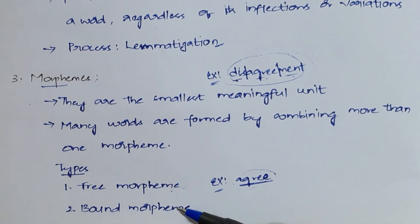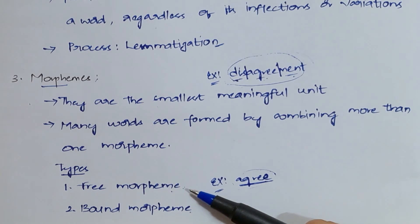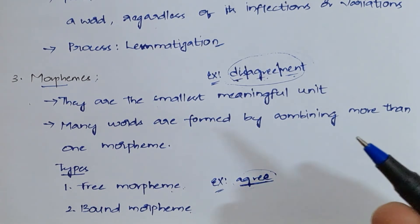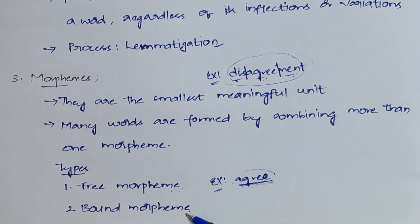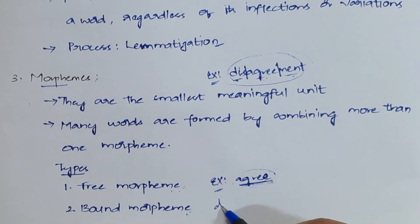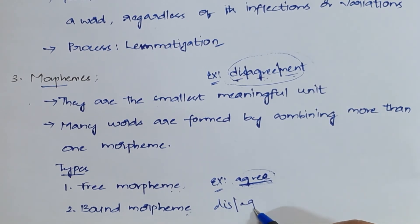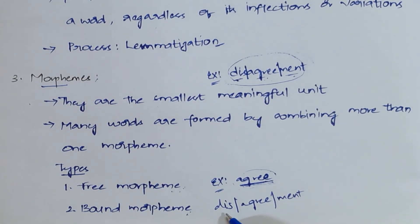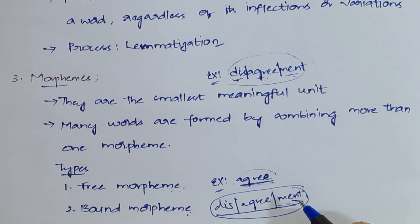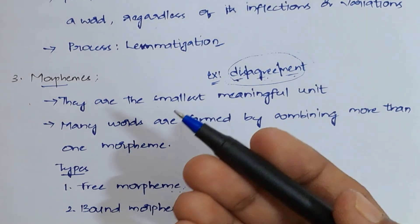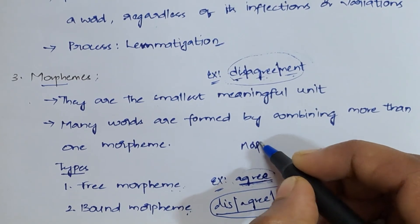There are two kinds of morphemes: free morphemes and bound morphemes. Free morphemes are independent — for example, 'agree' is a single independent word with meaning that cannot be further divided. Bound morphemes depend on other morphemes — in 'disagreement', 'dis', 'agree', and 'ment' are all morphemes that combine to give one meaningful word. Morphemes are obtained through the morphological process.